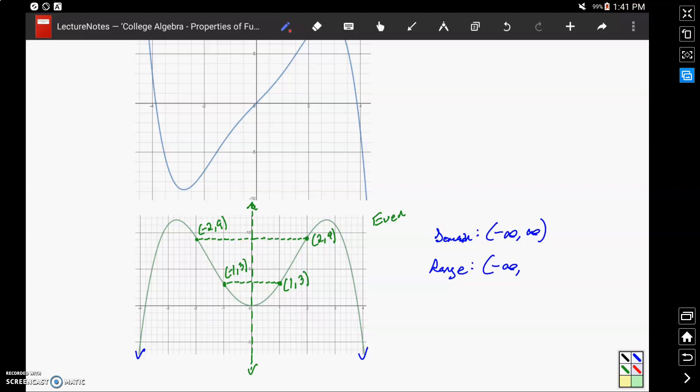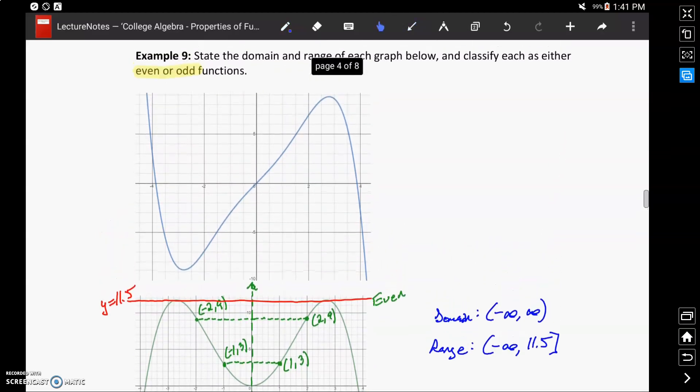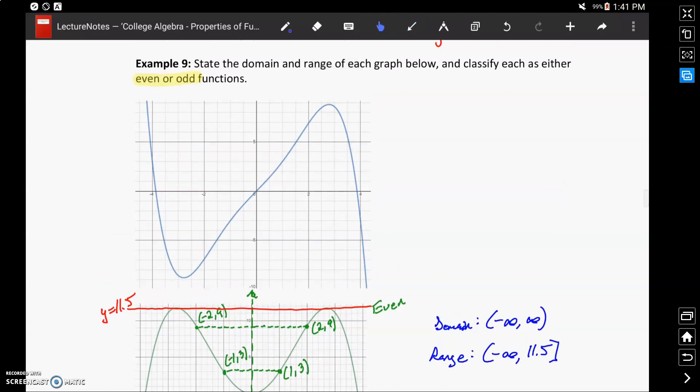All the way up to approximately 11.5. So in this case we have that maximum function value that we would hit. So that second graph represents an even function, since what we have is symmetry about the y-axis.